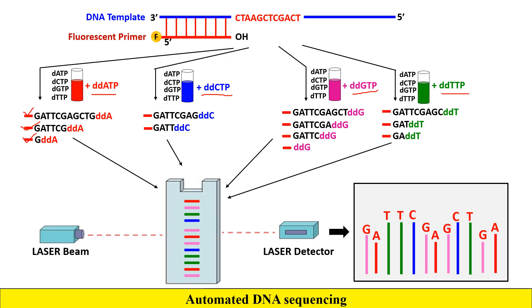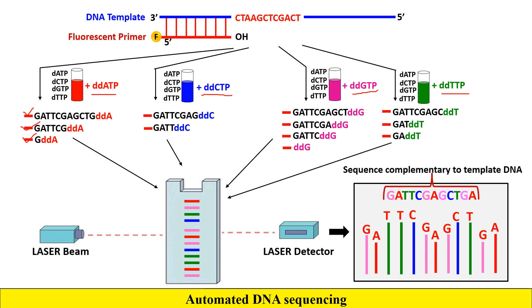According to size and color, the fragments are separated and visible in the chromatogram. Reading the sequence from the chromatogram gives us the sequence: G-A-T-T-C-G-A-G-C-T-A. Keep in mind this is the sequence of the newly synthesized DNA, not the template DNA, so to get the original template sequence we must take the complementary sequence of it.